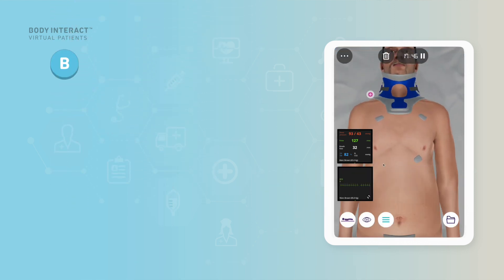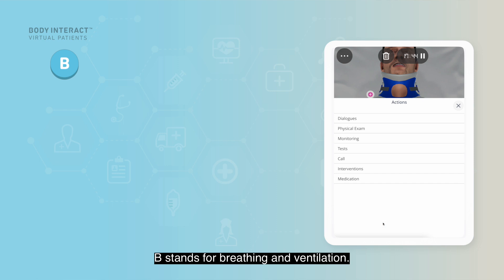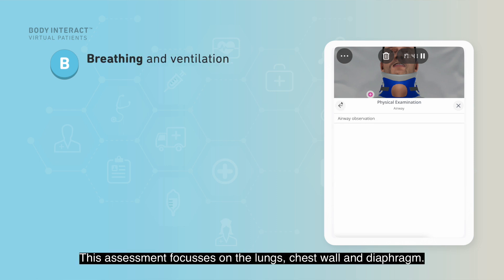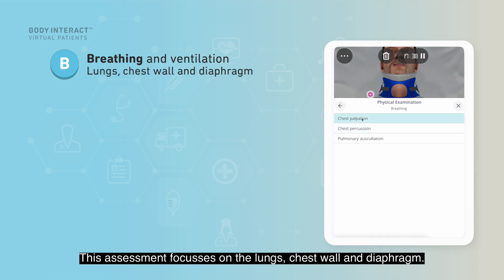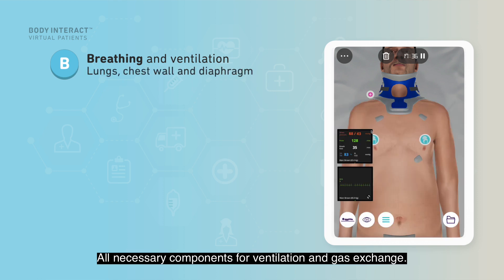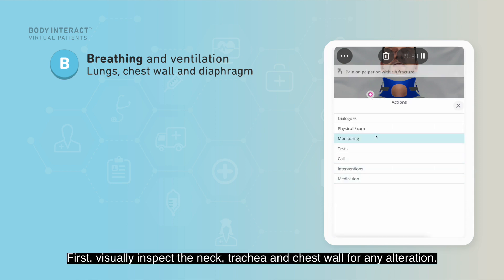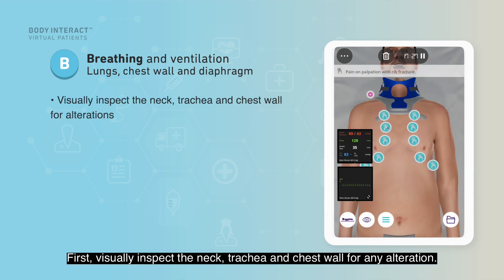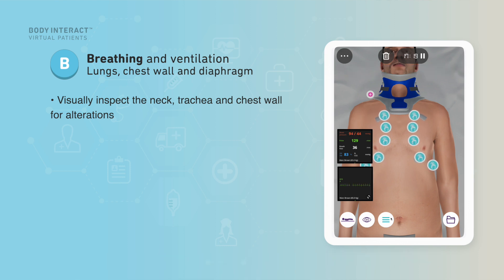B stands for breathing and ventilation. This assessment focuses on the lungs, the chest wall, and diaphragm — all necessary components for ventilation and gas exchange. First, visually inspect the neck, trachea, and chest wall for any alteration.